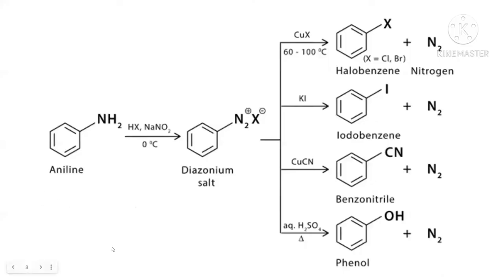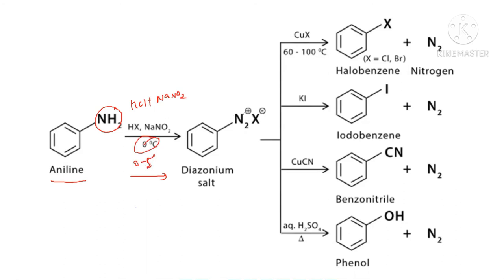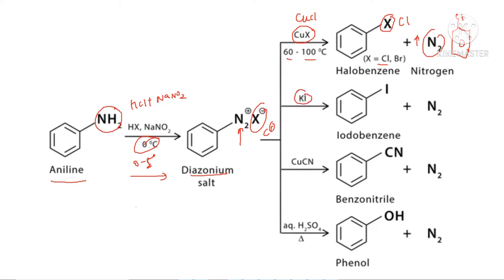We have aniline with an NH₂ group attached. We convert it to the diazonium salt using HCl, NaNO₂, at a temperature of 0 to 5 degrees Celsius. Once we do this, we get the diazonium salt where X is the chloride ion. Now if we want to convert to chlorobenzene, we heat at 60–100°C and add CuCl — copper chloride — and we get chlorobenzene along with nitrogen gas evolved.